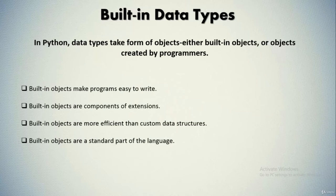Built-in objects are often more efficient than custom data structures. Python's built-in types employ already optimized data structure algorithms that are implemented in C for speed. Although you can write similar object types on your own, you'll usually be hard-pressed to get the level of performance that built-in object types provide.